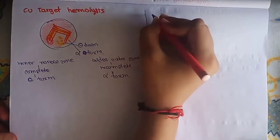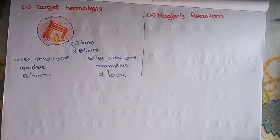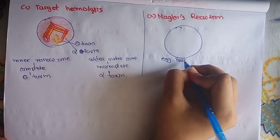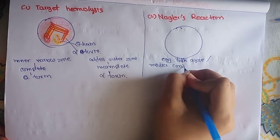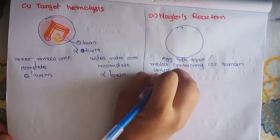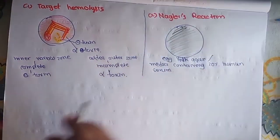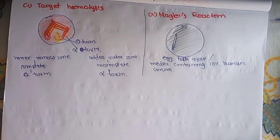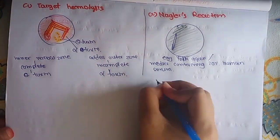The second method is Nagler reaction. Imagine that on the surface of egg yolk agar or the media containing 20% human serum. So this is the plate with egg yolk agar or the media containing 20% human serum. And this is the Clostridium perfringens and it will produce opalescence.